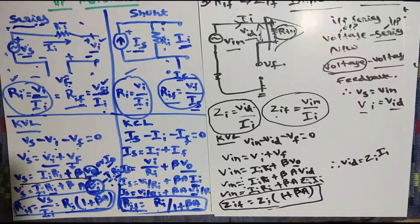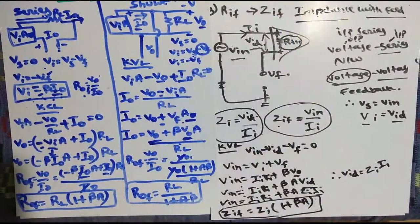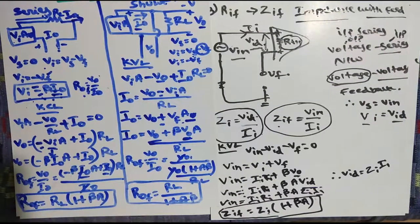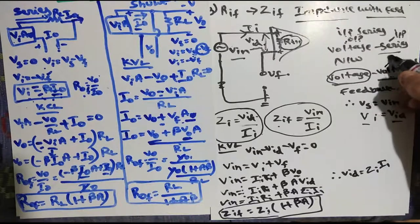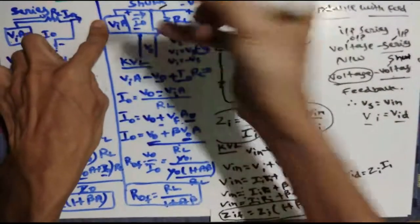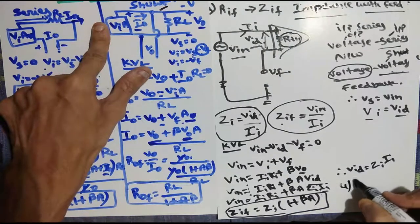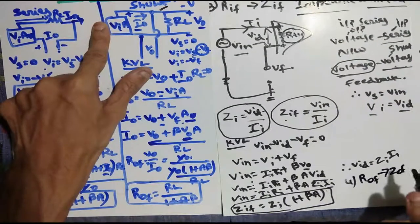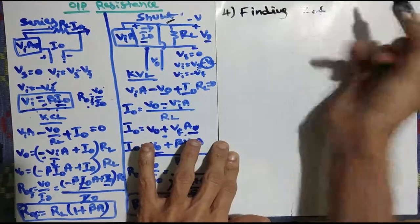Now we need to check how to get the output resistance. I'm not going to repeat that derivation because you already know how to do it from the series example. We're talking about voltage-voltage topology, so the output side is a shunt connection. For the fourth parameter, we need to find Zof.